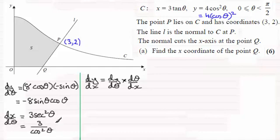Okay so we've got basically our two bits that we need for finding dy/dx. So we've got dy/dθ which is minus 8 sin θ cos θ.